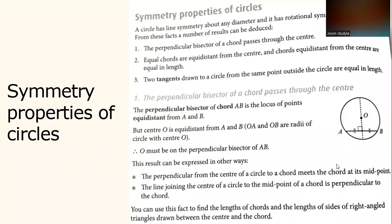Symmetry properties of circles. A circle has line symmetry about any diameter and has rotational symmetry about its center. From this thread, a number of results can be deduced: the perpendicular bisector of a chord passes through the center, equal chords are equidistant from the center, and chords equidistant from the center are equal in length.